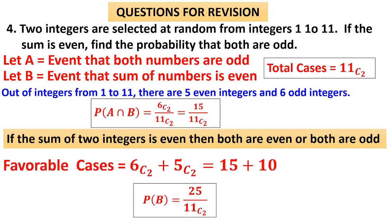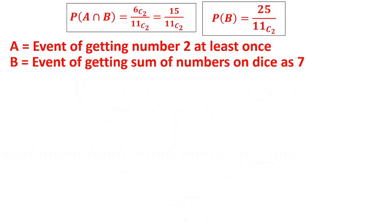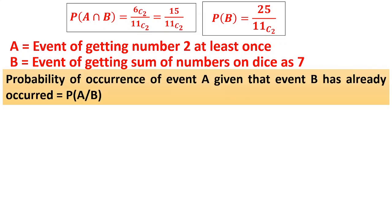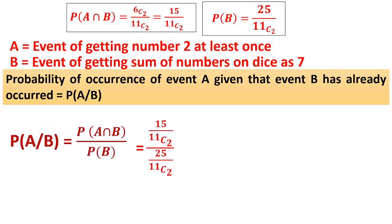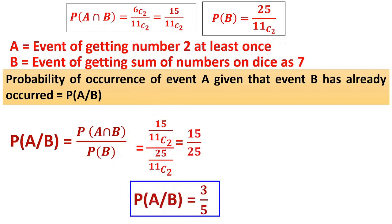Using the conditional probability formula: P(A|B) = P(A∩B) / P(B) = (15/11C2) / (25/11C2). The 11C2 cancels, giving 15/25, so the answer is 3/5.